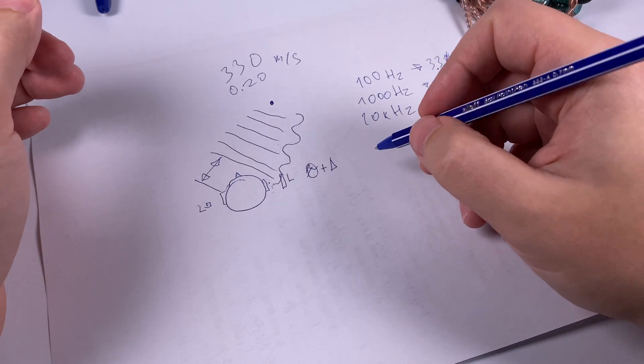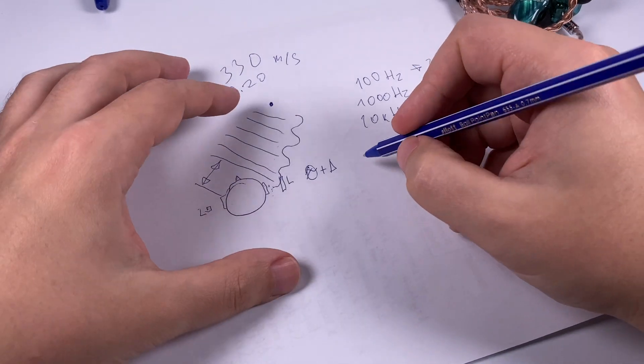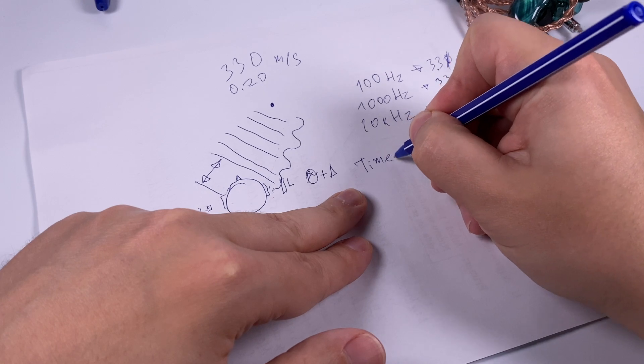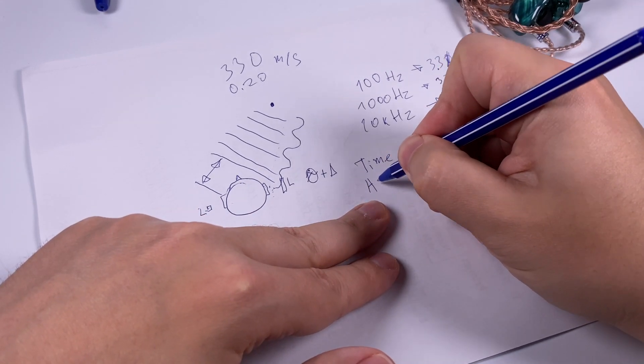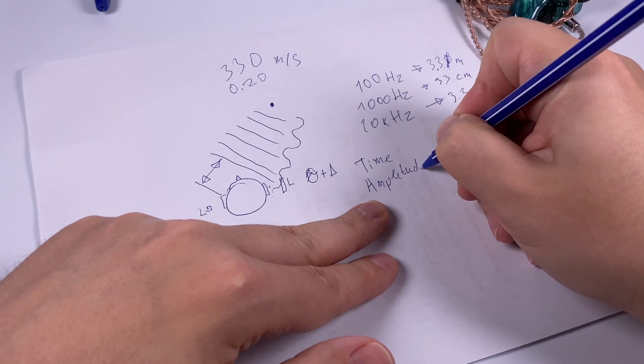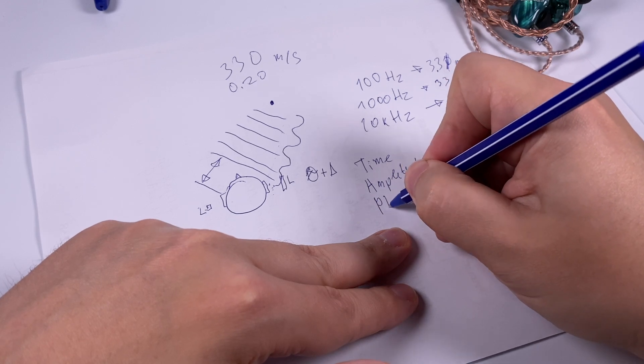So three different deltas: difference in time, in amplitude or loudness, and in phase.